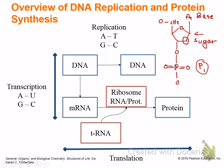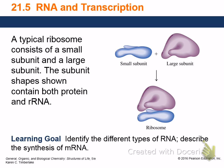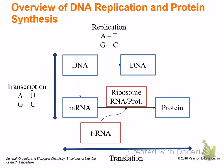A ribosome has two units — protein and rRNA, which stands for ribosomal RNA. It has a big unit and a little unit and they clamp around a strand of messenger RNA. Inside the nucleus of the cell, you're going to make a copy of the mRNA, get some processing done to it, and then it comes out of the nucleus. Transcription happens in the nucleus.